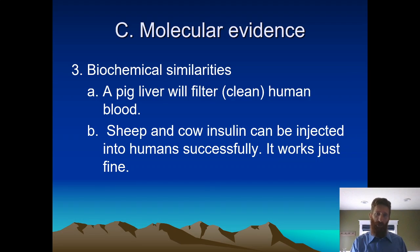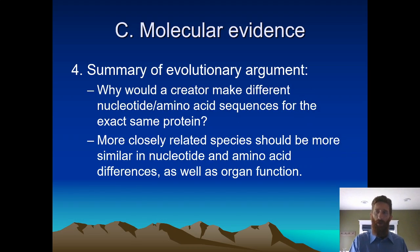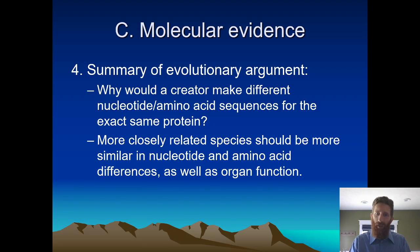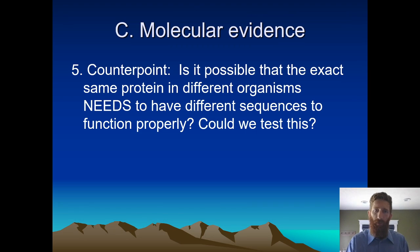Pig liver will actually clean human blood. Sheep and cow insulin can be injected into humans — insulin from the pancreases of sheep and cows can actually be used. That's what they did before biotechnology and before they used bacteria to make insulin. So again, why would a creator make different nucleotides for the same protein? More closely related species should be similar in nucleotide and amino acid sequence, as well as organ function. That's what we see. More closely related organisms have similar DNA. A penguin is a bird, a goose is a bird — they have more similar DNA than a bat and a goose, or than a bass and a penguin. So again, that supports the tree of life.